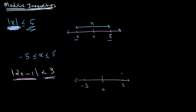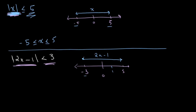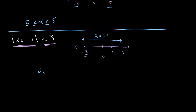Since the magnitude of 2x minus 1 is less than 3, it won't go further from 0 than positive 3 and it won't go further from 0 than negative 3. Therefore it can be anything in between — for example, if this is 1, the magnitude is less than 3, and this is where you will find the expression 2x minus 1, between negative 3 and 3.